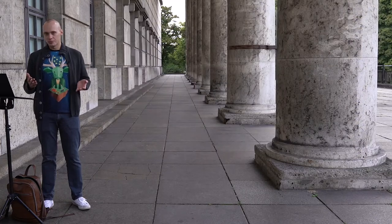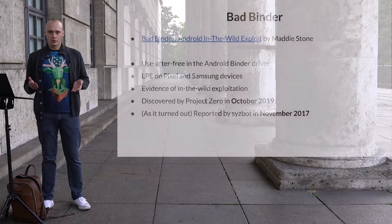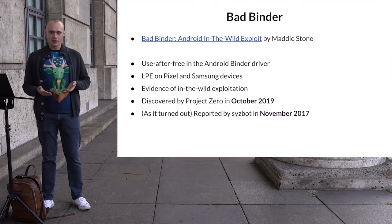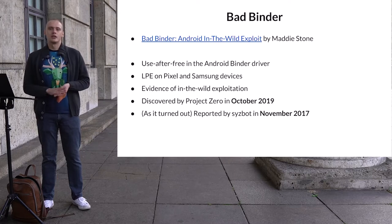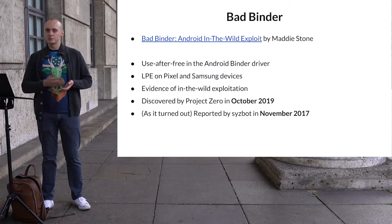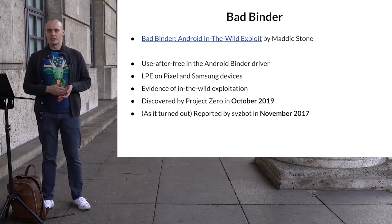Not all of those bugs are vulnerabilities; however, some of them are. One example would be BadBinder, a bug in the Android kernel that was supposedly used to attack Android users. It was ultimately found and fixed by Project Zero, but it had actually been reported by SysBot two years before that, and no one noticed it back then.